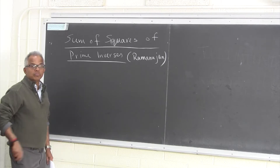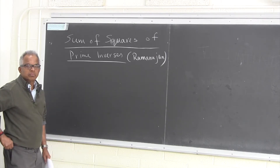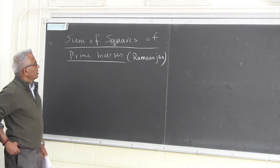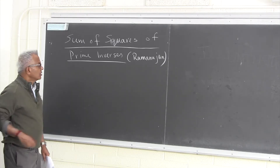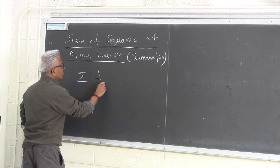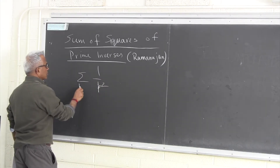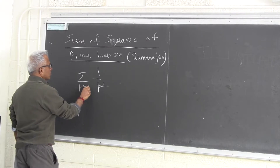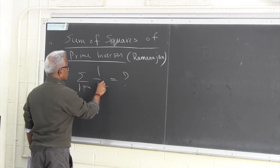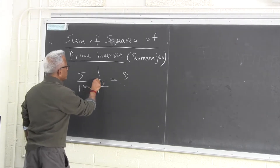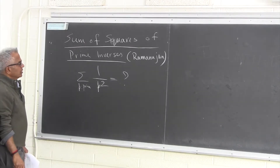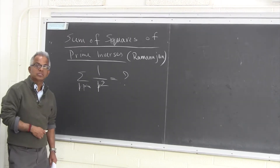Alright, so let's look at this problem. This is a number theory problem — the sum of squares of prime inverses. In other words, this is what we want to compute: 1 over p squared, p going over all primes. So if you sum it up, how much is it?